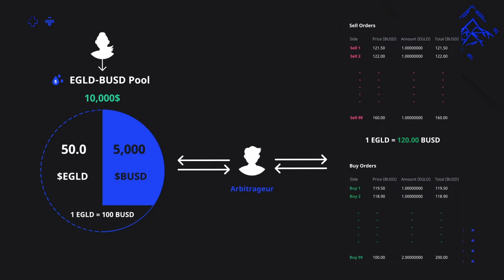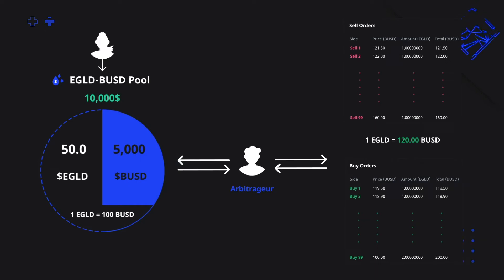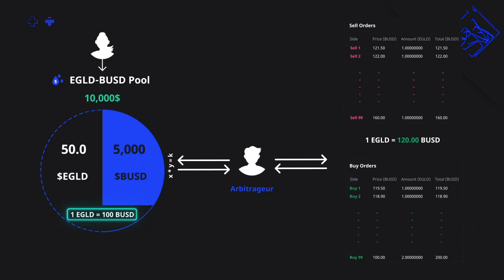Arbitrageurs are traders that use bots to quickly buy the cheaper Egold from MyerExchange, or other AMMs, and sell it for a profit on Binance. So they will come in and interact with your pool — the EGLDBUSD pool — and they will start buying Egold at 100 BUSD until they bring the price up to 120 BUSD. The arbitrageur begins buying our cheaper Egold from our pool, starting at 100 BUSD. The more he buys, the more BUSD he needs to pay per Egold as the formula is applied.